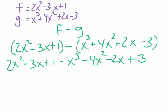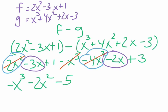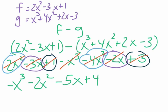So again with the ordering: we have negative x to the third — remember that is a negative. Then positive 2x squared and negative 4x squared combine to give negative 2x squared. Then negative 3x and negative 2x combine to give negative 5x. And positive 1 and positive 3 give positive 4. So the answer is negative x to the third minus 2x squared minus 5x plus 4. Just make a note of that answer and concentrate on it for a moment.